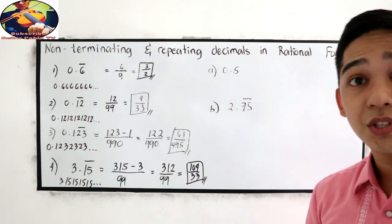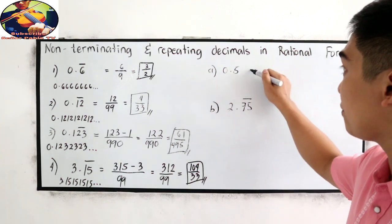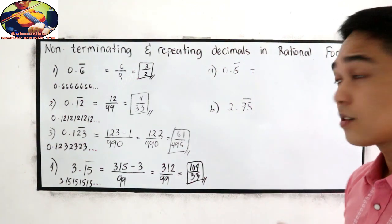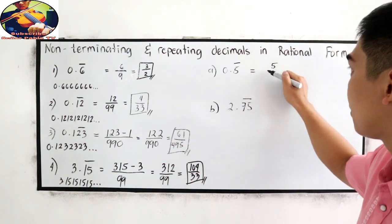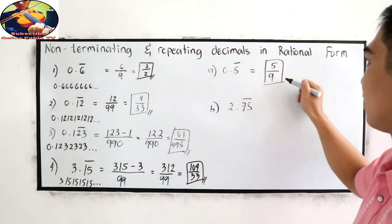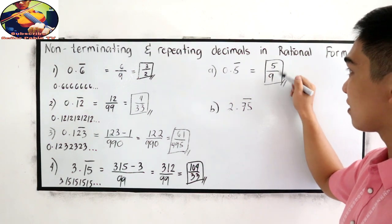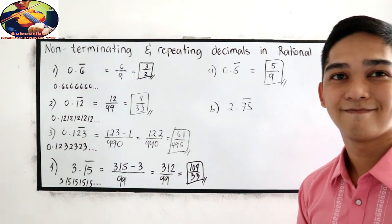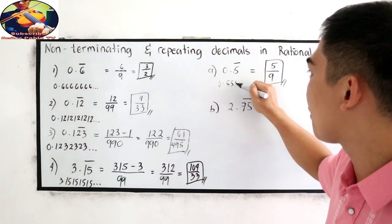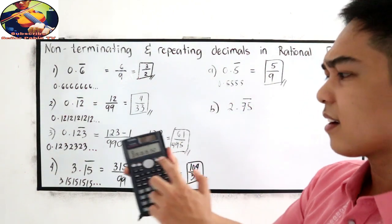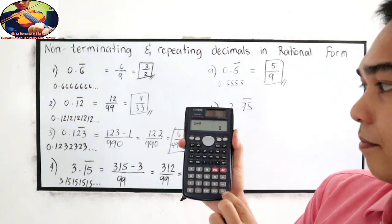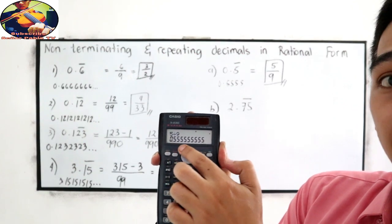Now let's check. 0.5 bar: that is 5 over 9, simple as that, because this is already in simplest form. We know that this is 0.5555. Let us check: 5 divided by 9 equals 0.5555.